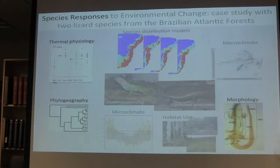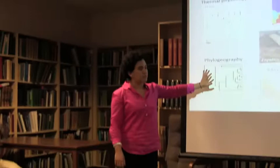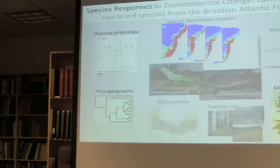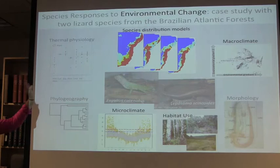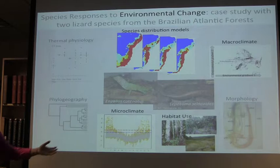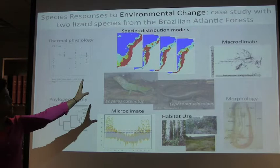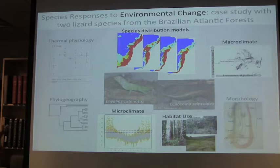In terms of species responses, I'm going to look at phylogeography, genetic structure, thermophysiology, and morphology, and relate those with environmental change or environmental attributes. I'm going to look at species distribution models and habitat suitability — both current and historical — microclimates, especially temperature conditions, macroclimate or climate variability, and habitat units or habitat structure.